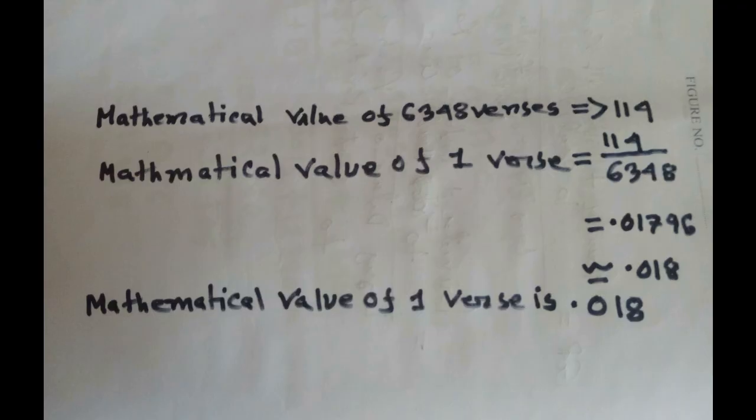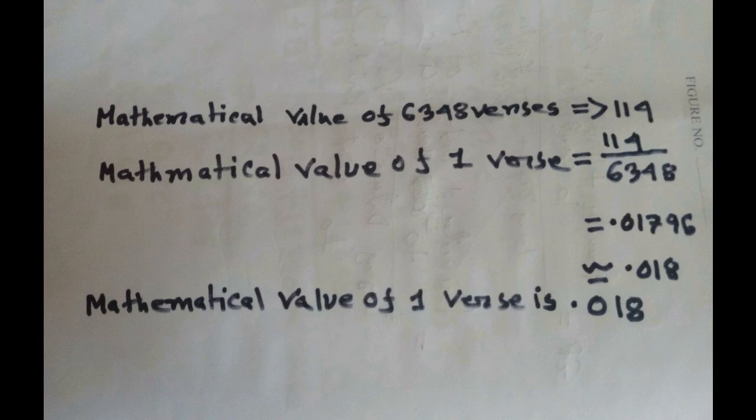So if 6348 verses have a mathematical value of 114, then the mathematical value of one verse will be 114 divided by 6348, which is approximately 0.018. Since Bismillah has no number, we conclude that the mathematical value of a Bismillah is also 0.018.